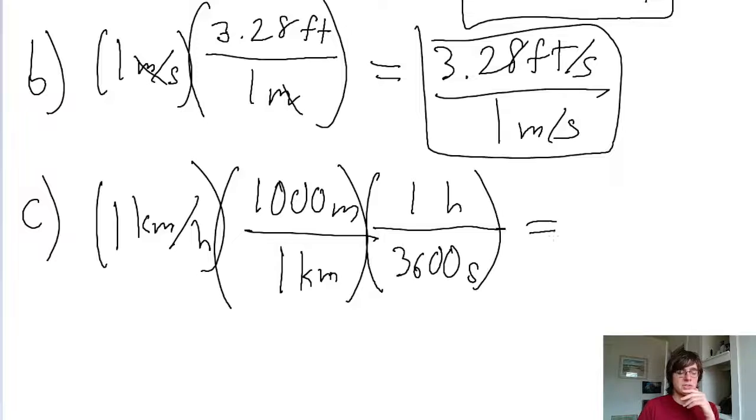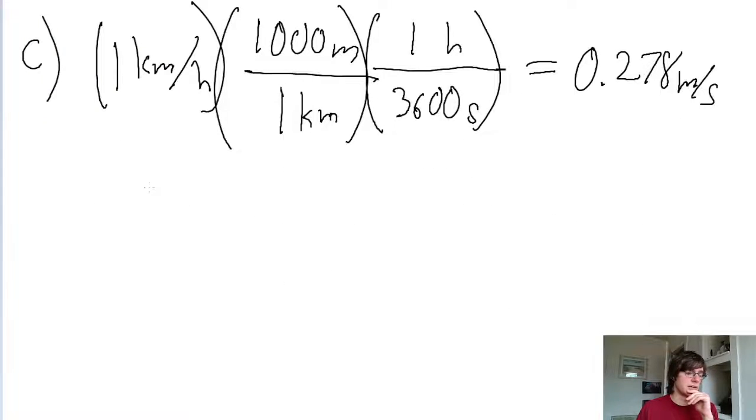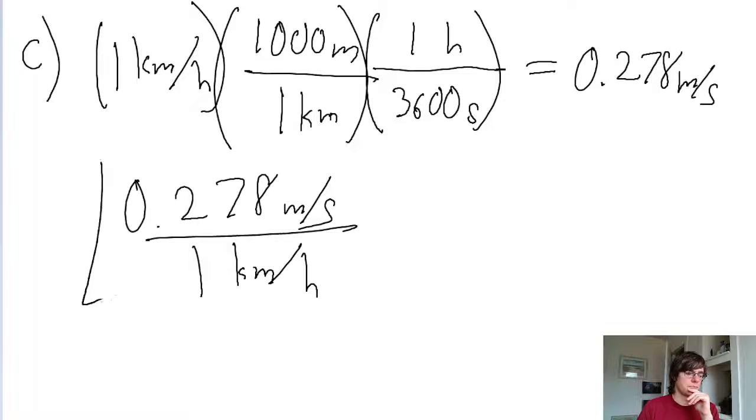So if you put this into a calculator, we get 0.278 meters per second. So 0.278 is our conversion factor - that is, 0.278 meters per second is equivalent to 1 kilometer per hour. That's our conversion rate.